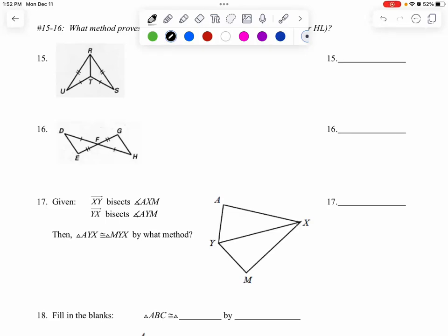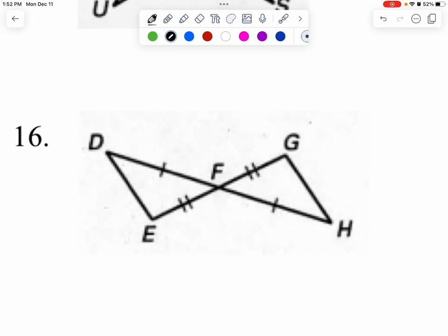Alright, DBA review packet number 16 through 20. I'm going to zoom in on number 16 here because it's asking us these triangles are congruent why or how.